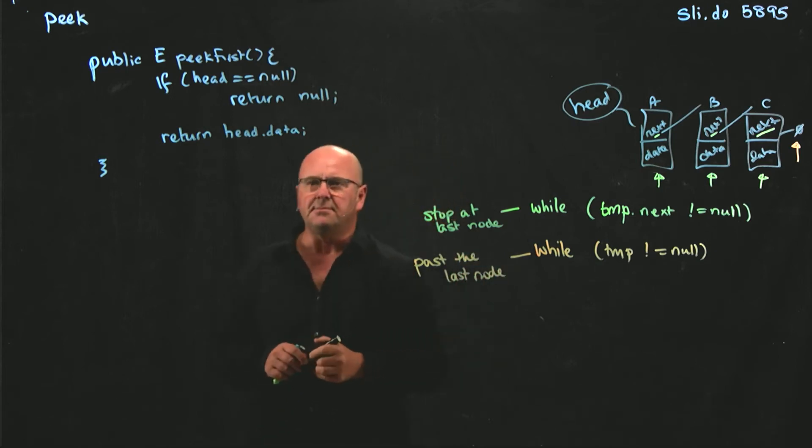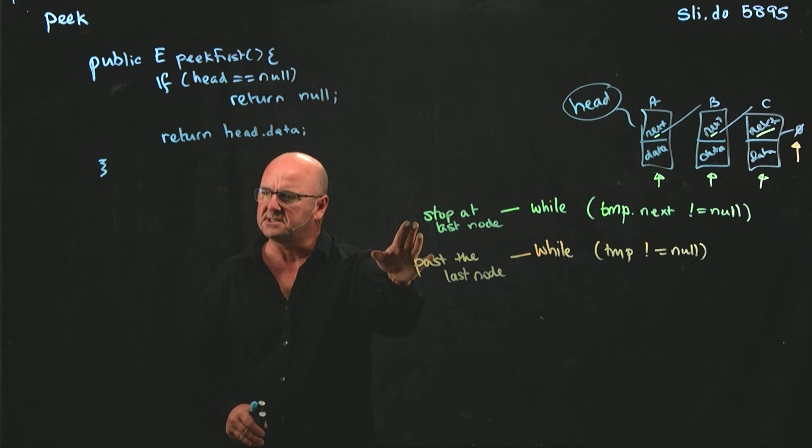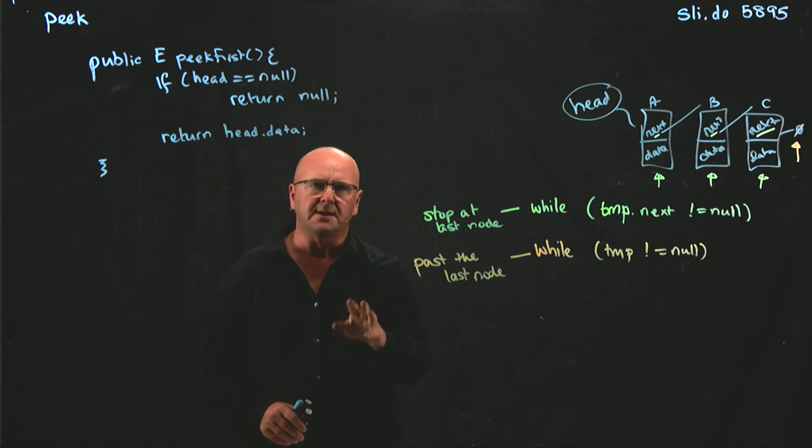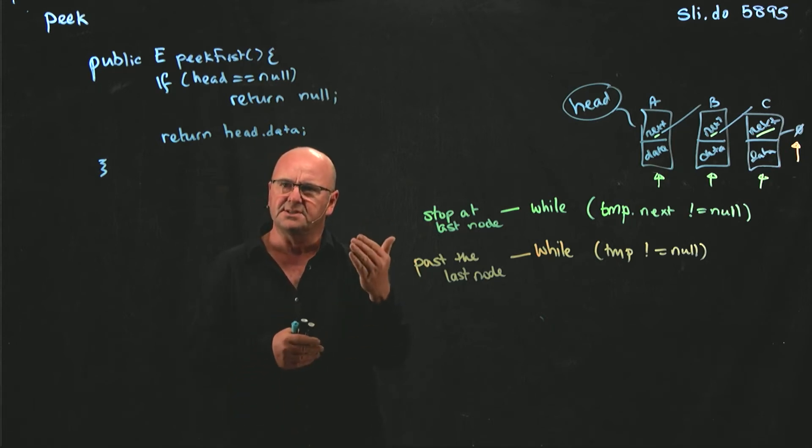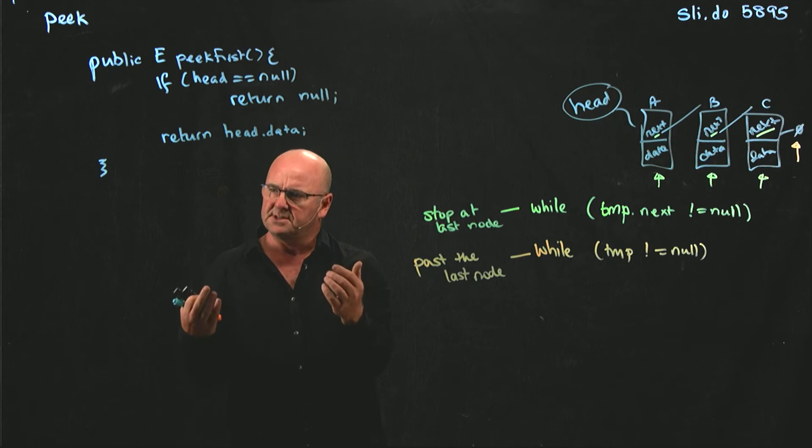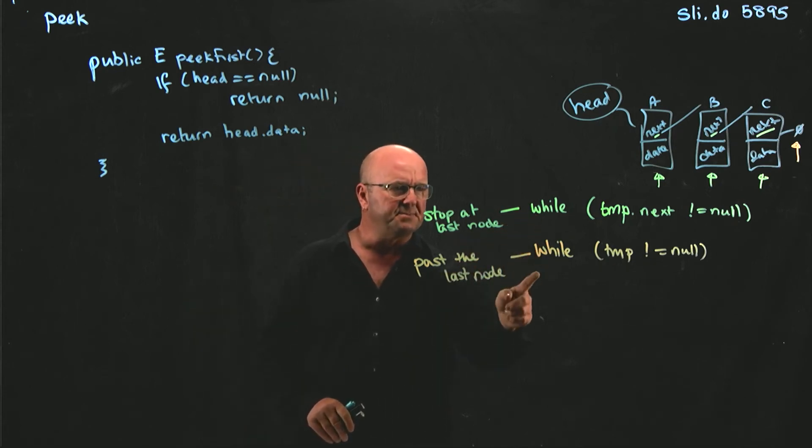There are some cases where it's important to go past the last node, for example, in the contains method, or the remove method where you're given an object to remove. But there are some cases where it's really important to stop at the last node. For example, if we want to do peak last like this, or in our remove last method, where we want to have one pointer that stops at the last node and one pointer that stops at the node before it. So there's a very fundamental difference between these two.